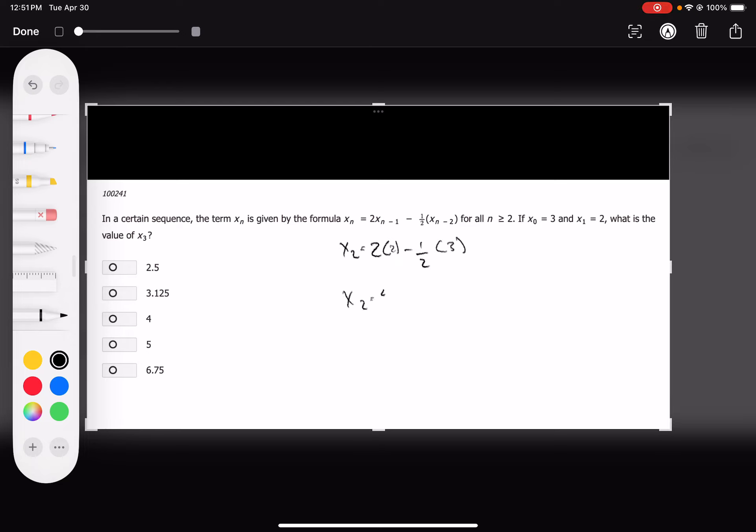So now we just do the math. x of 2 equals 4 minus 1 half of 3 is 1.5. So x of 2 equals 4 minus 1.5, which is 2.5.